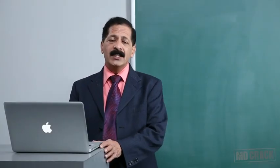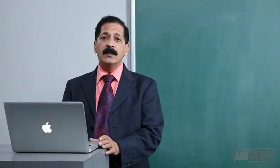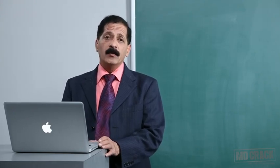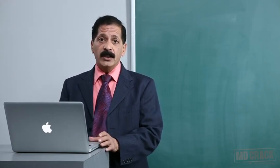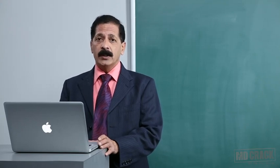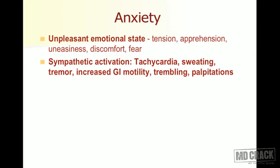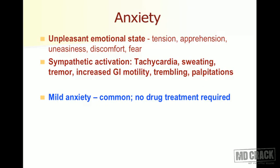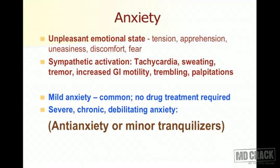After discussing depression and antidepressant drugs, we go on to discuss anxiety. Anxiety means worry — a disproportionate worry. It is an unpleasant emotional state associated with tension, apprehension, uneasiness, discomfort, and fear. There is sympathetic activation due to anxiety, leading to tachycardia, palpitation, tremor, increased GI motility, trembling, and sweating. Mild anxiety is quite common and requires no drug treatment, but when it becomes severe, chronic, or debilitating, we need to treat it with anti-anxiety agents, also called anxiolytics or minor tranquilizers.